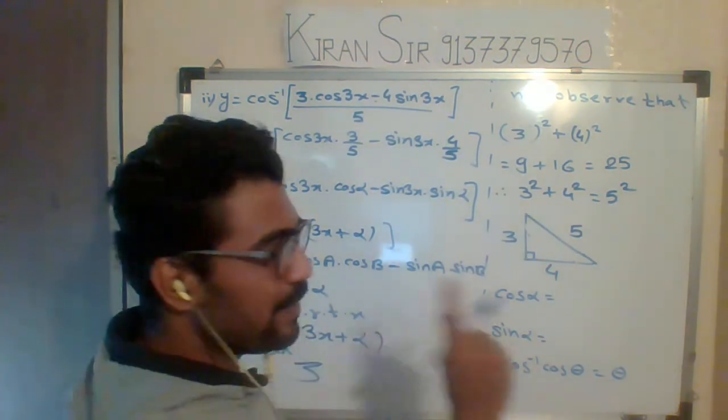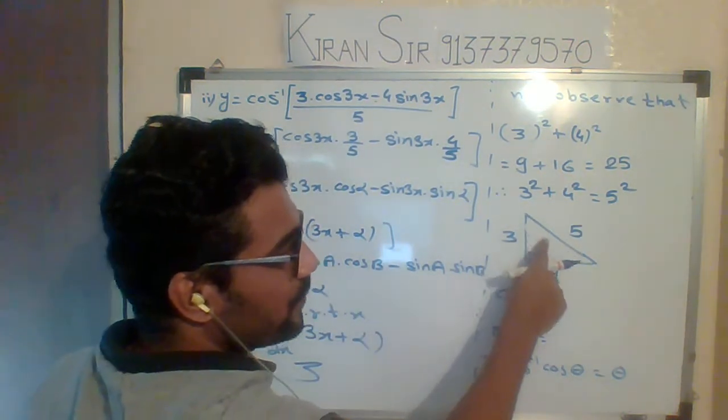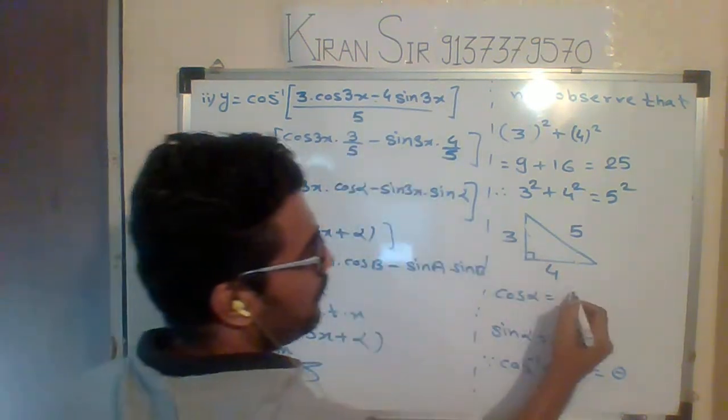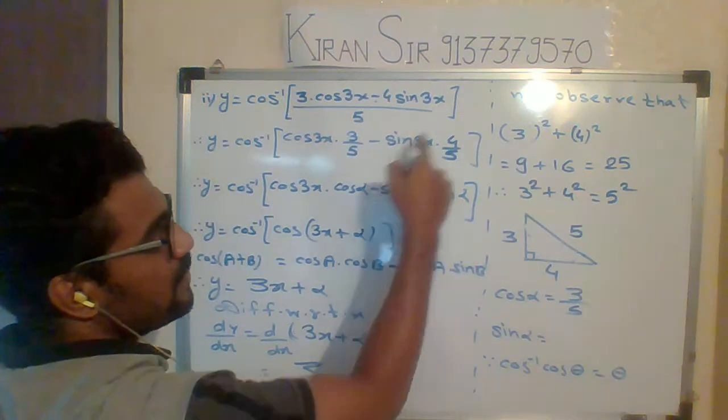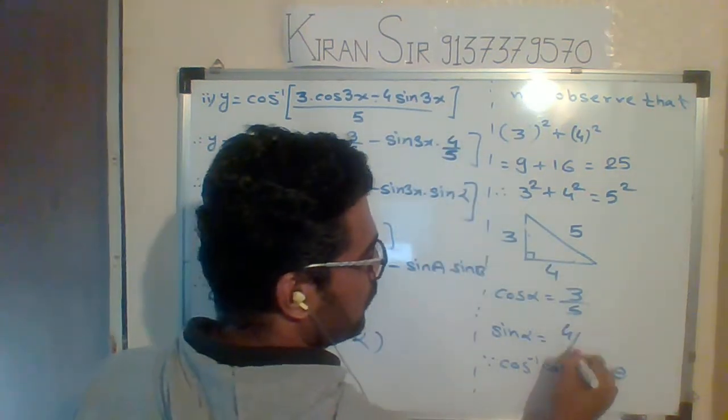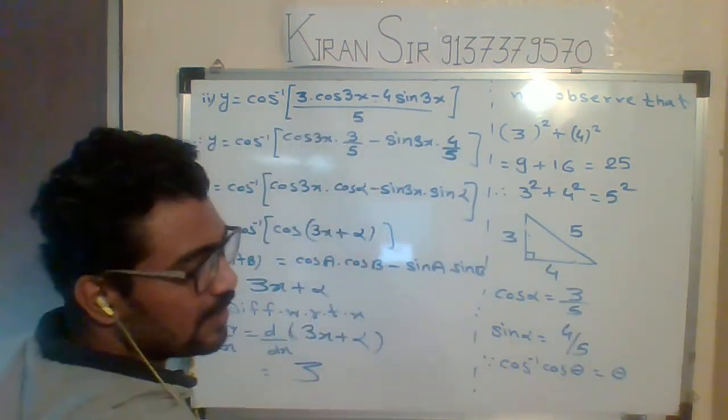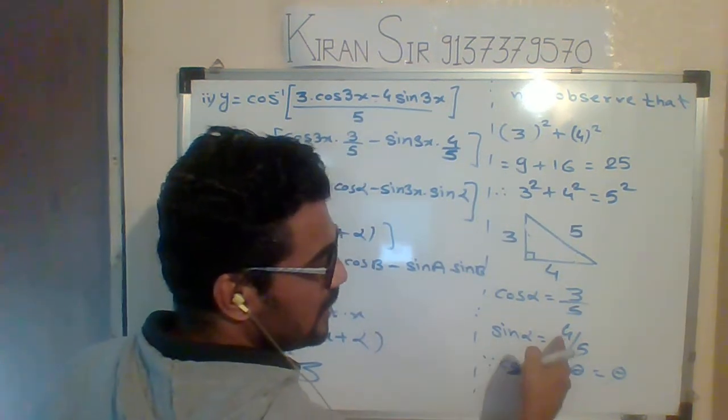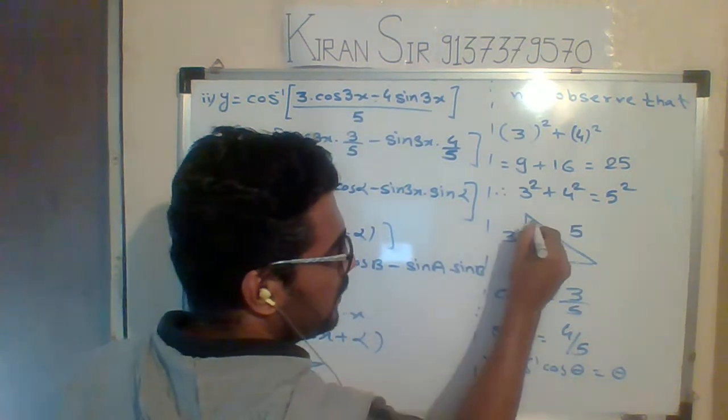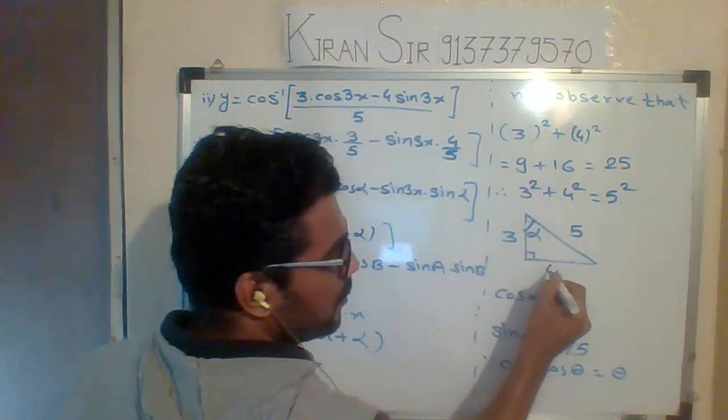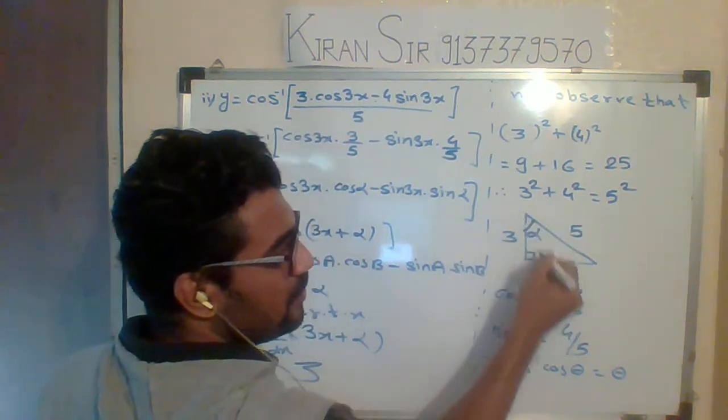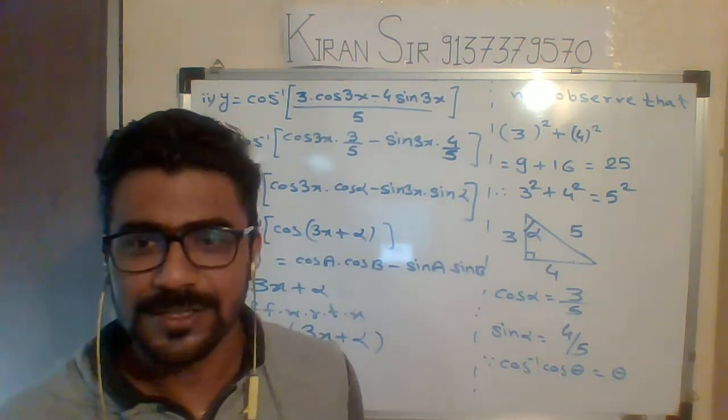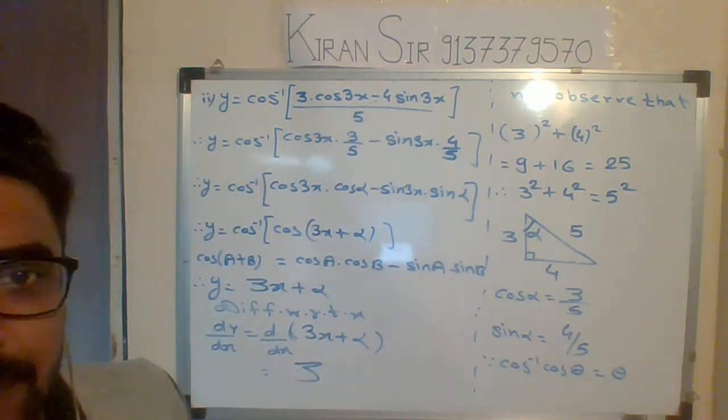But only one thing you have to remember: you have to decide here α. So what cos α have we taken? 3 upon 5. And sine α? 4 upon 5. Now you have to decide α in your right angle triangle. I will take α here. Why? Because 4 is the opposite side of α. Understood students, this is really easy. Nothing is difficult. Please copy.